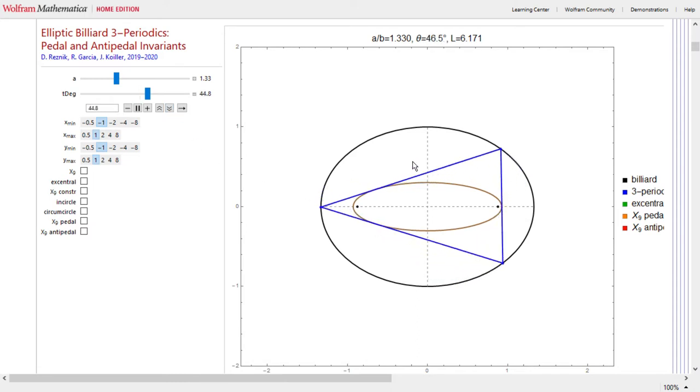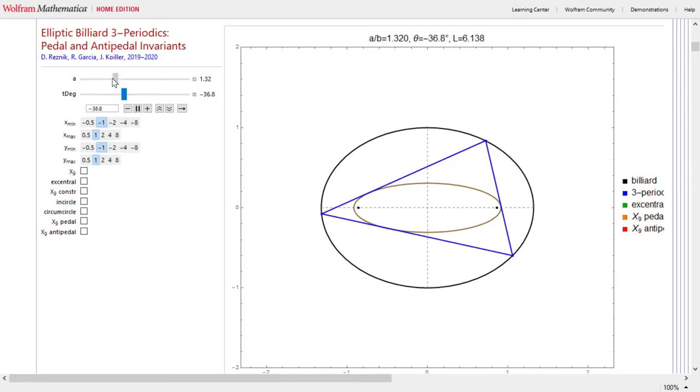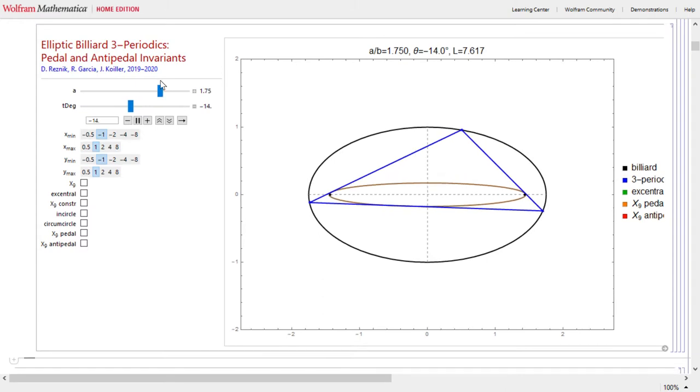So they share these two black dots, the foci. This is one known classic invariance regarding n-periodics in general, just looking at n equals 3. Another classic invariance is the fact that the perimeter of the family is invariant. So in this case it's 6.171. If I change the aspect ratio of the elliptic billiard, for example make it more eccentric, now the aspect ratio major by minor is 1 by 0.7550, you've got a different perimeter, but the cool thing is that this perimeter is preserved over the family.